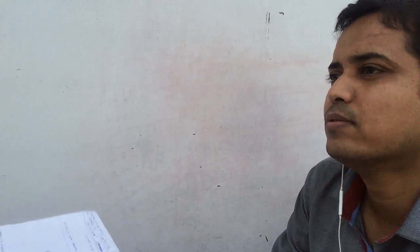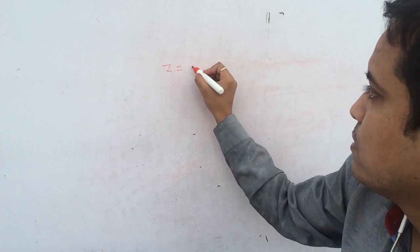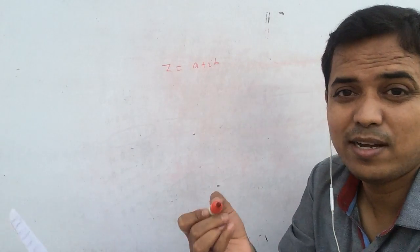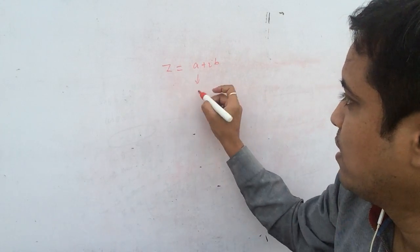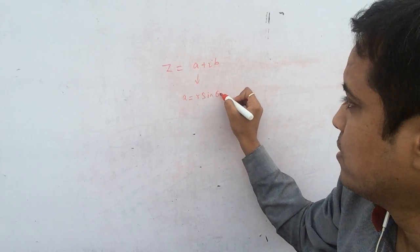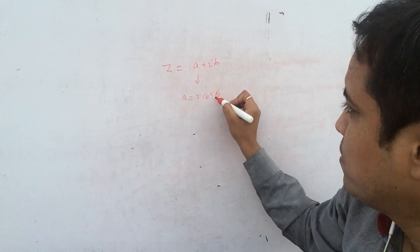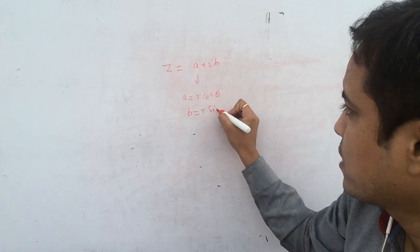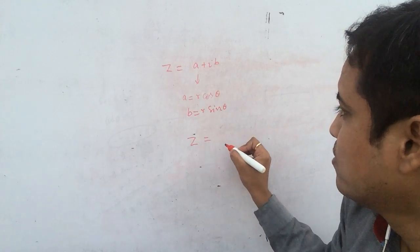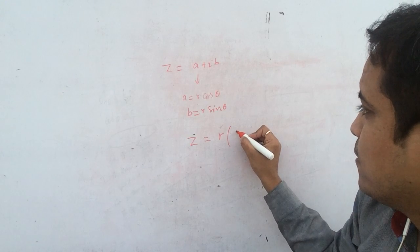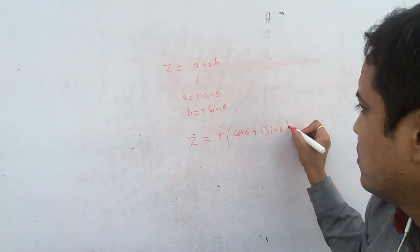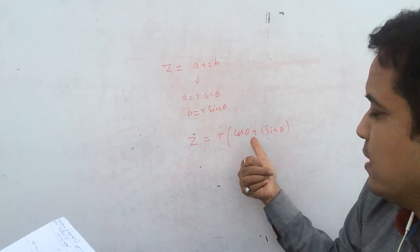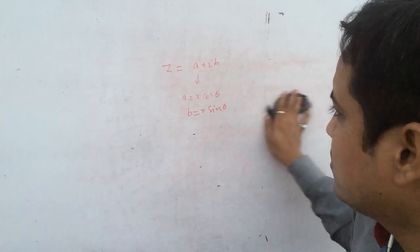The polar representation of the complex number: since A = R cos θ and B = R sin θ, we can write Z = R(cos θ + i sin θ). This is called the polar representation, where R is the modulus of Z and θ is the argument.